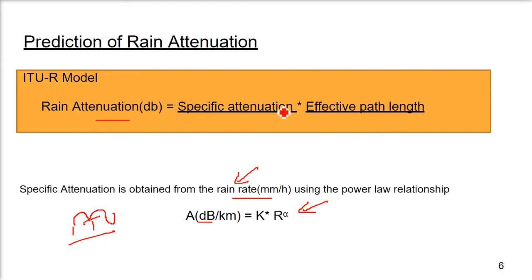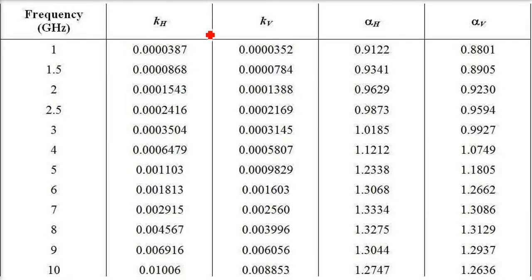Here we have A as attenuation, k and alpha as regression coefficients, and R is the rain rate. So this k and alpha you just saw is also available to us. Nothing to worry about.